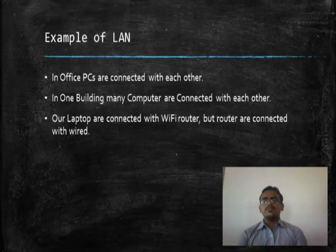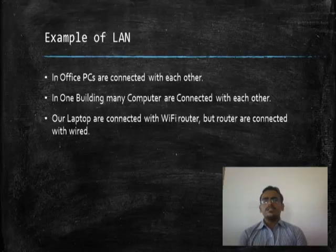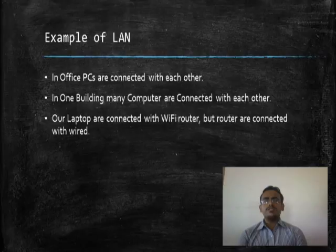Let's see the example. The example of the LAN network is one office where many computers are connected with each other, including a hub, switch, printer, and many more devices. One building, like a company, is connected — many computers, PCs, and printers are all connected with each other. Another example is our laptop connected with Wi-Fi. The Wi-Fi router is wireless but is connected with a wire, and this is also called a LAN network.